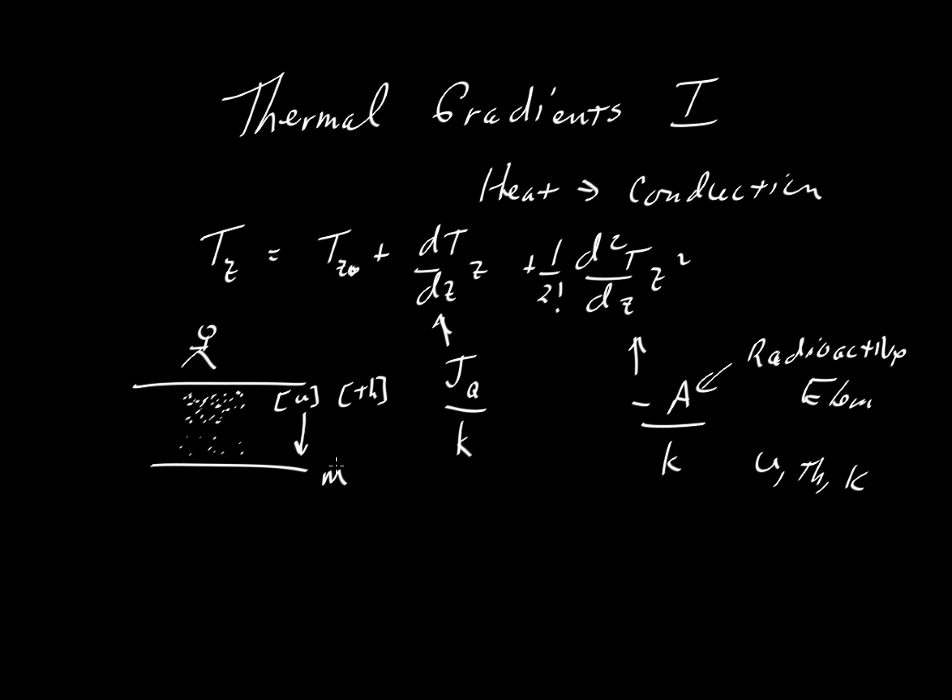We're going to have a new equation, one that is in the textbook by Turcotte and Schubert, that shows how to account for this in a slightly different way. We're going to use the same kind of terminology we used earlier. So we have temperature at some depth z equal to the temperature at a reference depth z naught. And again, we'll let z naught equal zero, so it'll be Earth's surface.